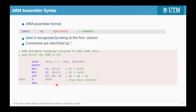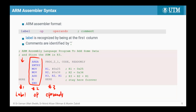In ARM assembler syntax, the label is recognized by being in the first column. Comments are identified by a semicolon — everything written after the semicolon is a comment. In the example shown, the first column is the label, the second column contains the mnemonics or operations, followed by the operands such as destination register R1 and source, then finally the comments.